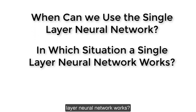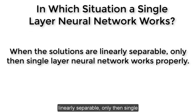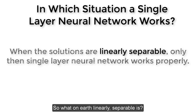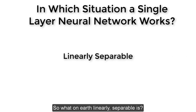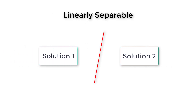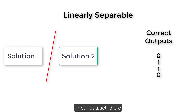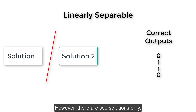It does not work in every situation - it works for some particular situations. So in which situation does a single-layer neural network work? The answer is when the solutions are linearly separable. Only then does a single-layer neural network work properly. Linearly separable means when we can separate two different solutions with a straight line. In our dataset there are four correct outputs, but there are two solutions only - zeros and ones.